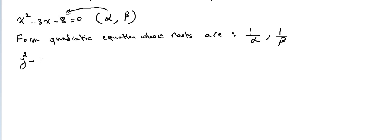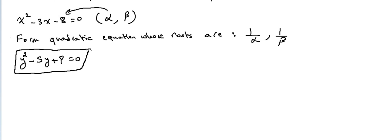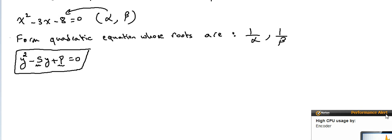So the new equation takes the form y²−(sum)·y+(product)=0. To form this equation we need to know the sum and the product of the new equation and substitute them in.